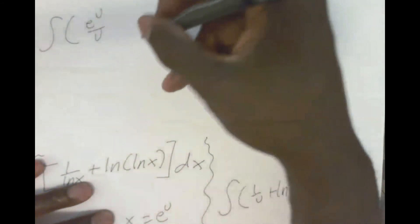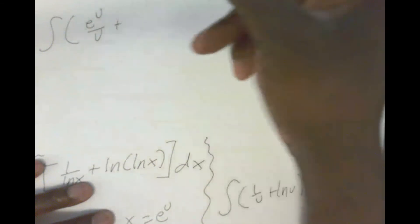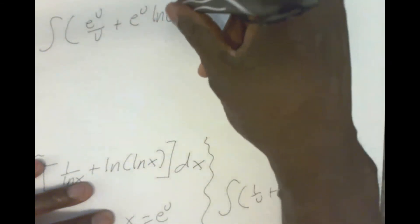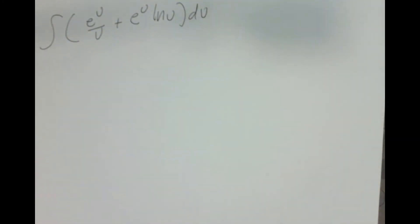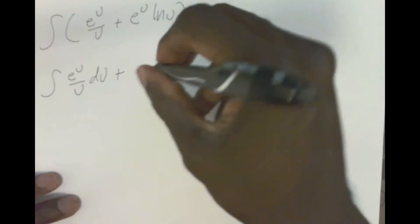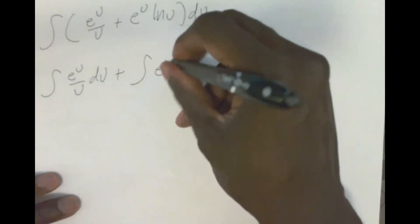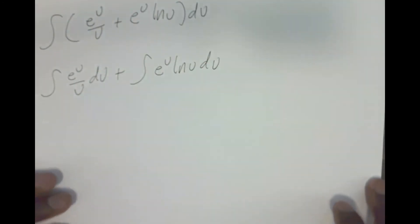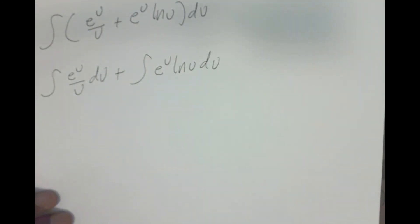This is not a U-sub situation — it's more in the realm of integration by parts. So I'm going to transfer to another paper. What I have is the integral of e^U over U plus e^U · ln U · DU. For the way the problem works out, I'm going to split this into two different integrals: the integral of e^U over U · DU, plus the integral of e^U · ln U · DU.